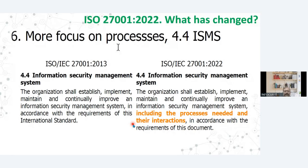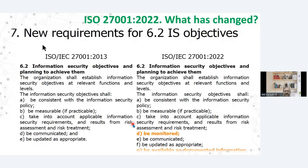Then clause 4.4 — earlier into the information security management system — changes are being made. This is a minor change that has been made in 4.4. Then in clause number 6, the additional words that are being added are: 'be monitored' and 'be available as documented information.' It means that 6.2 is required as a mandatory document now.